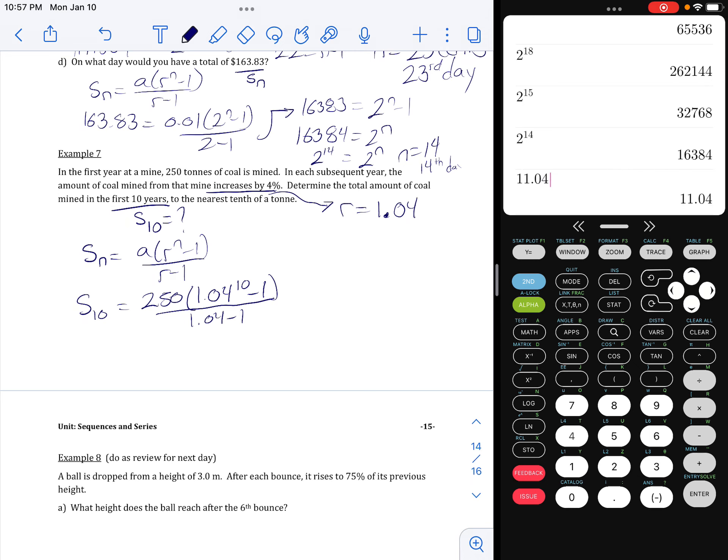So we go 1.04 exponent 10, minus 1, times 250, divided by 1.04 minus 1.